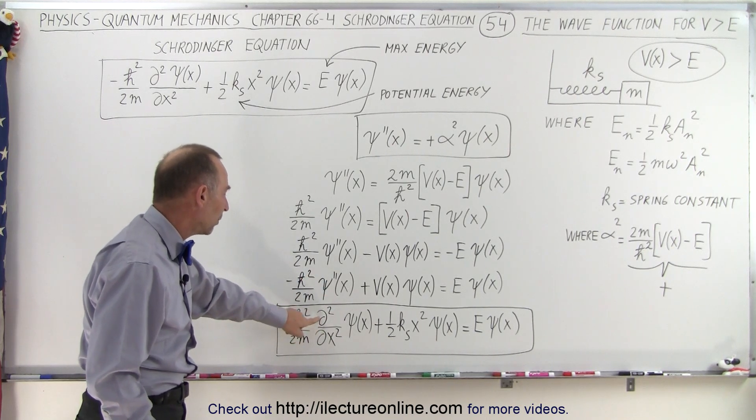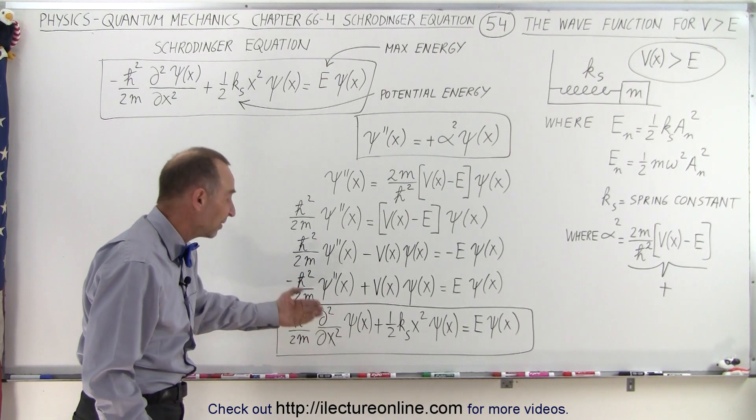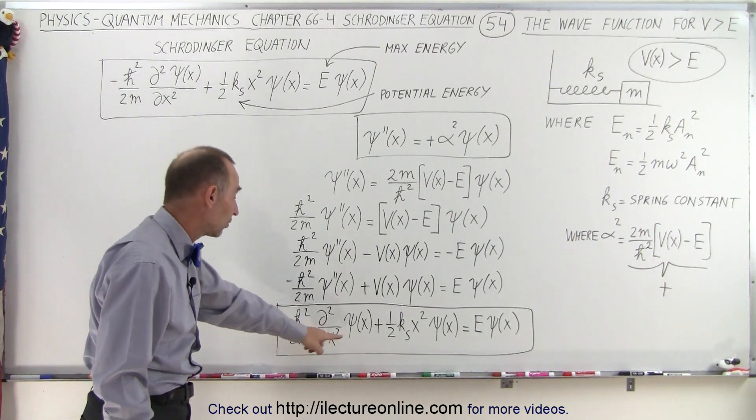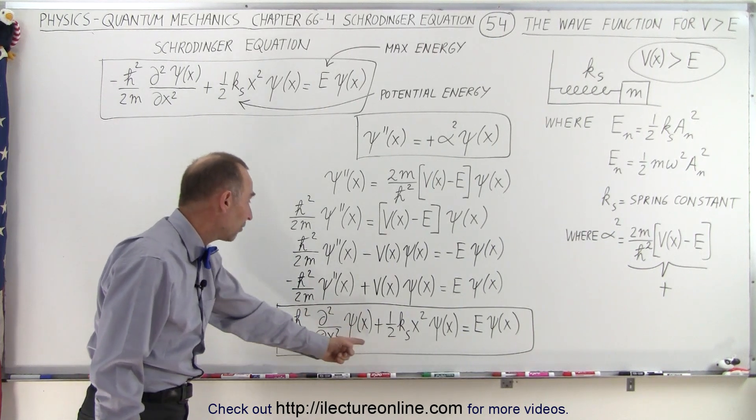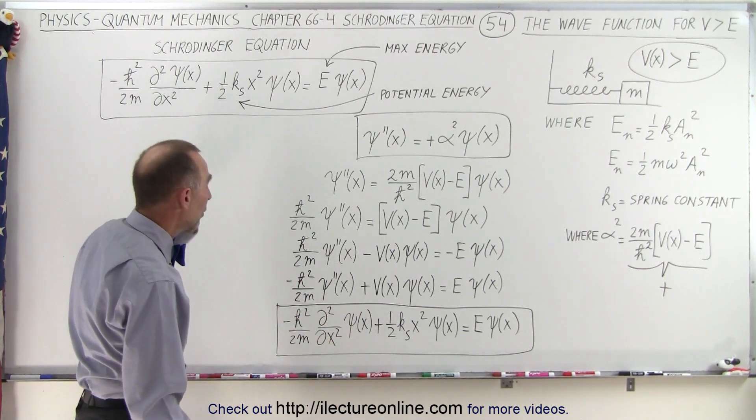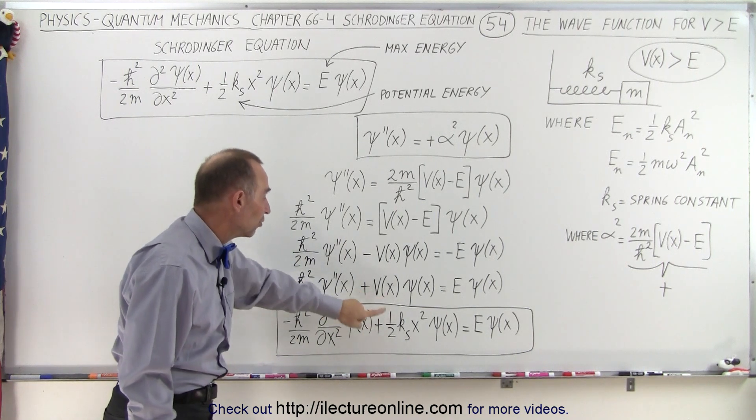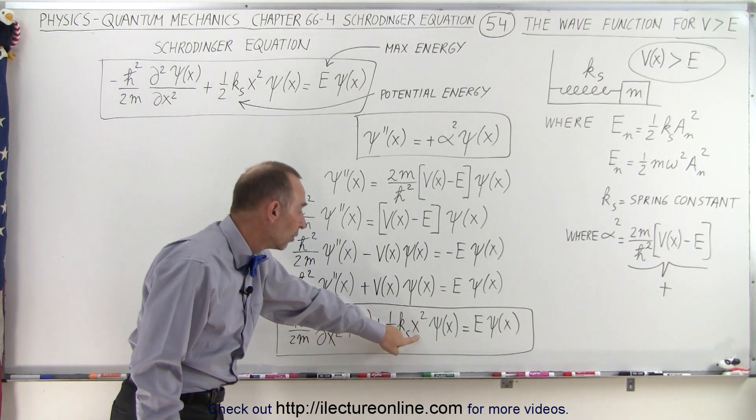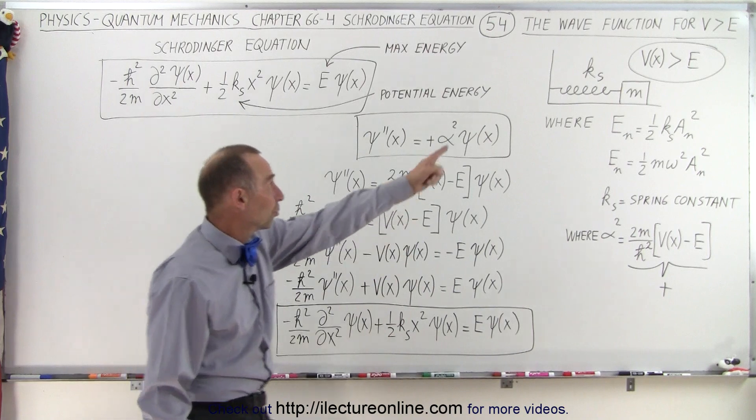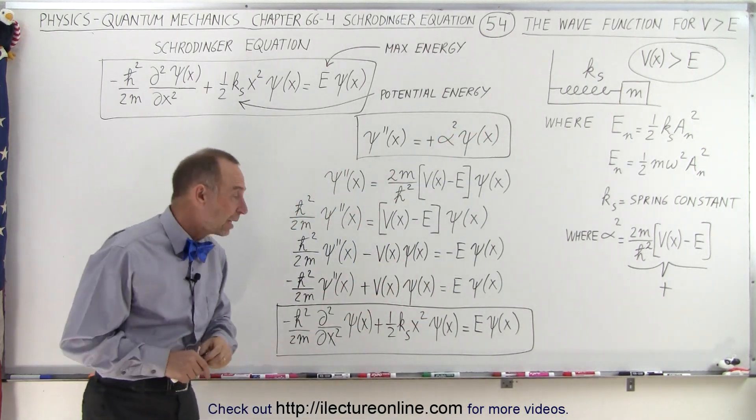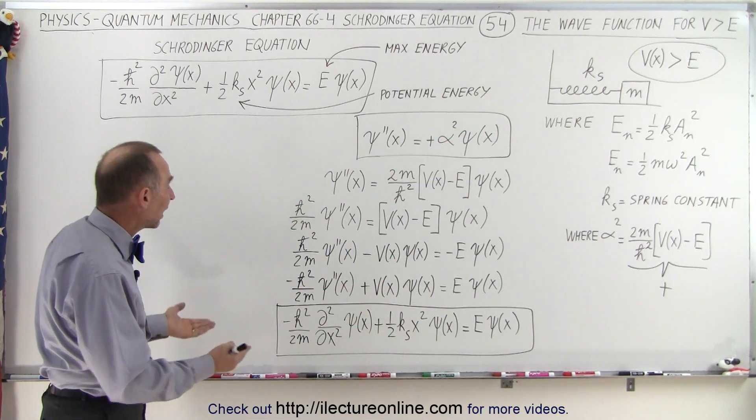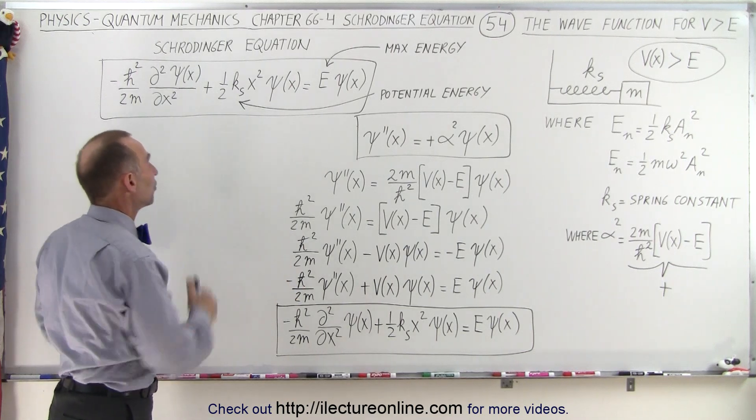And then if we replace this form of the equation, the second derivative by the partial with respect to x, the second derivative of the partial with respect to x of the wave function, then we have something that looks exactly like this when we also replace the potential energy by 1 half k x squared. k of course is the spring constant. x is the position away from the equilibrium point. And notice that we have the exact same equation.